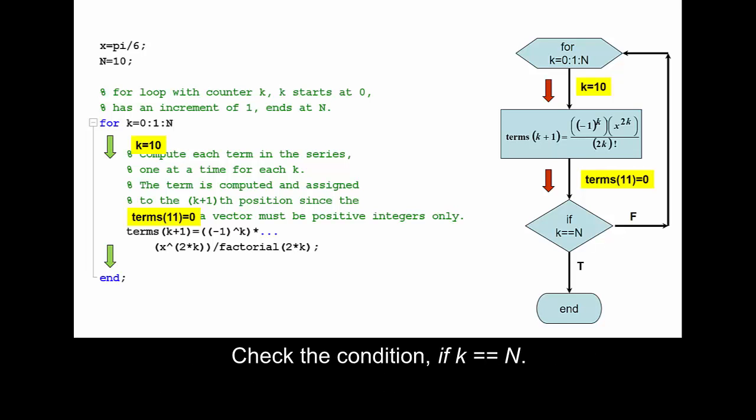Check the condition if k == n. For this iteration, if 10 == 10, the condition is found to be true, so the loop ends.